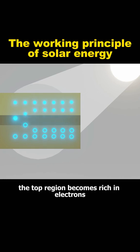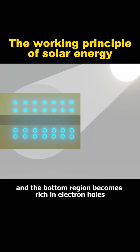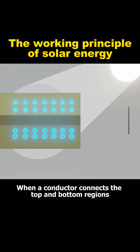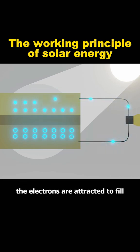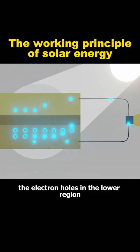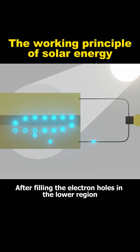At this point, the top region becomes rich in electrons and the bottom region becomes rich in electron holes. When a conductor connects the top and bottom regions, the electrons are attracted to fill the electron holes in the lower region.